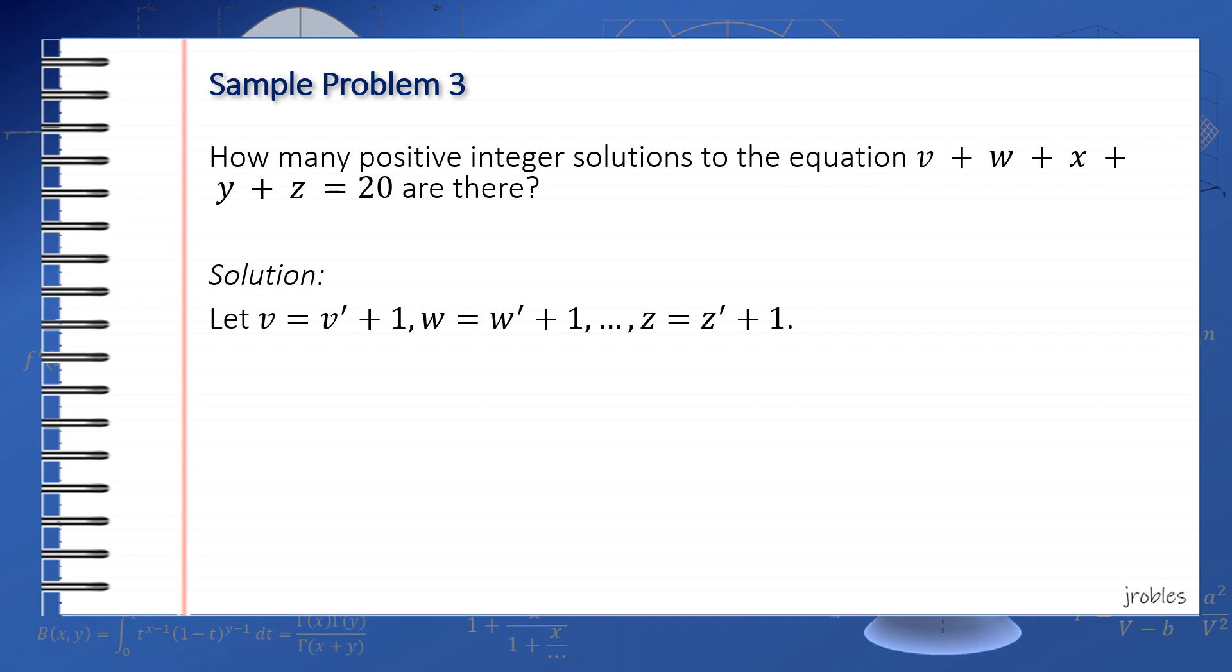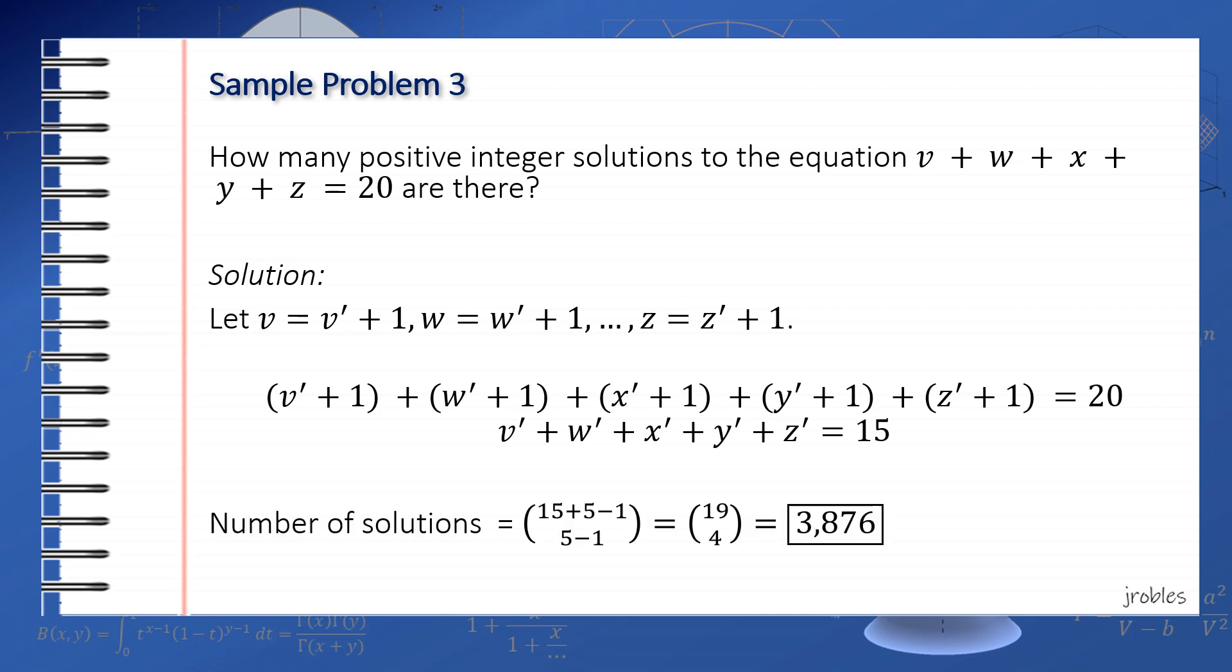Now the equation becomes v' + 1 + w' + 1 + ... = 20, which simplifies to v' + w' + x' + y' + z' = 15. Again, by stars and bars, the total number of solutions is equal to C(15+5-1, 5-1) = C(19,4). For other problems, the introduction of the primed variables often helps.